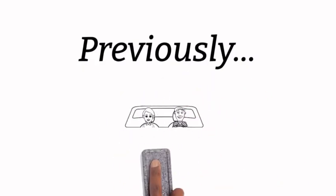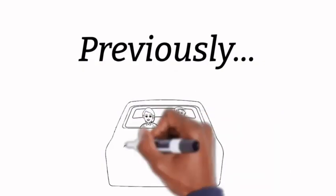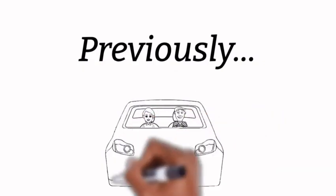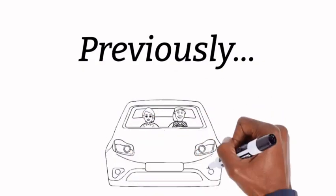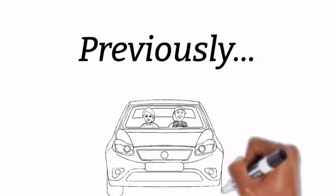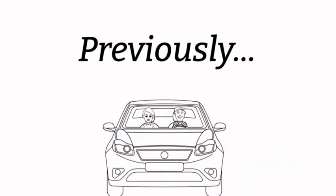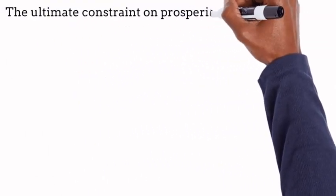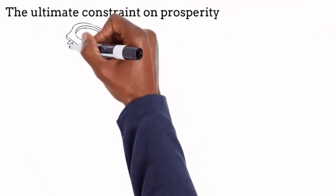Previously on Modern Money, we looked at the four facets of a sovereign currency. Now we learn what the ultimate constraints on prosperity are.